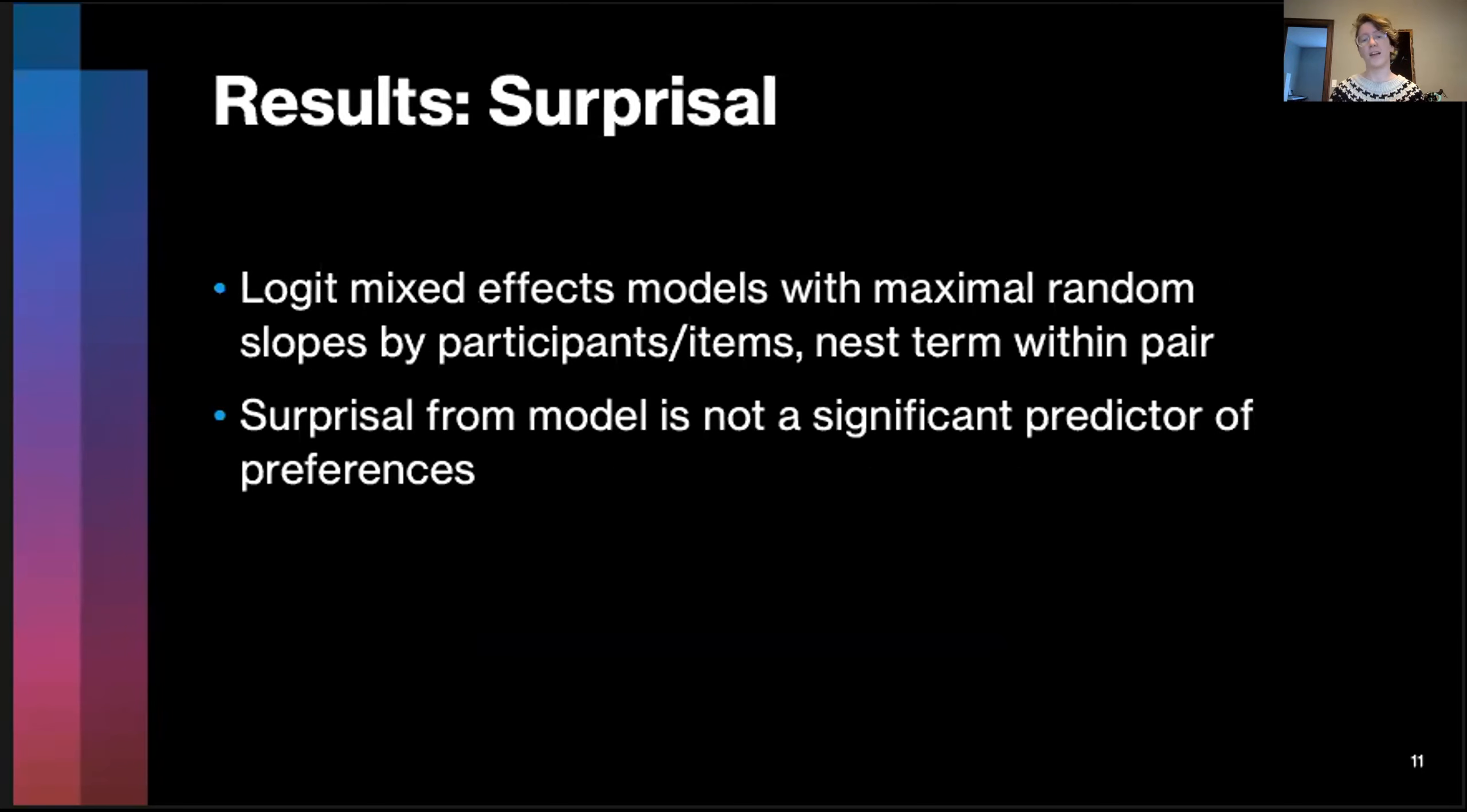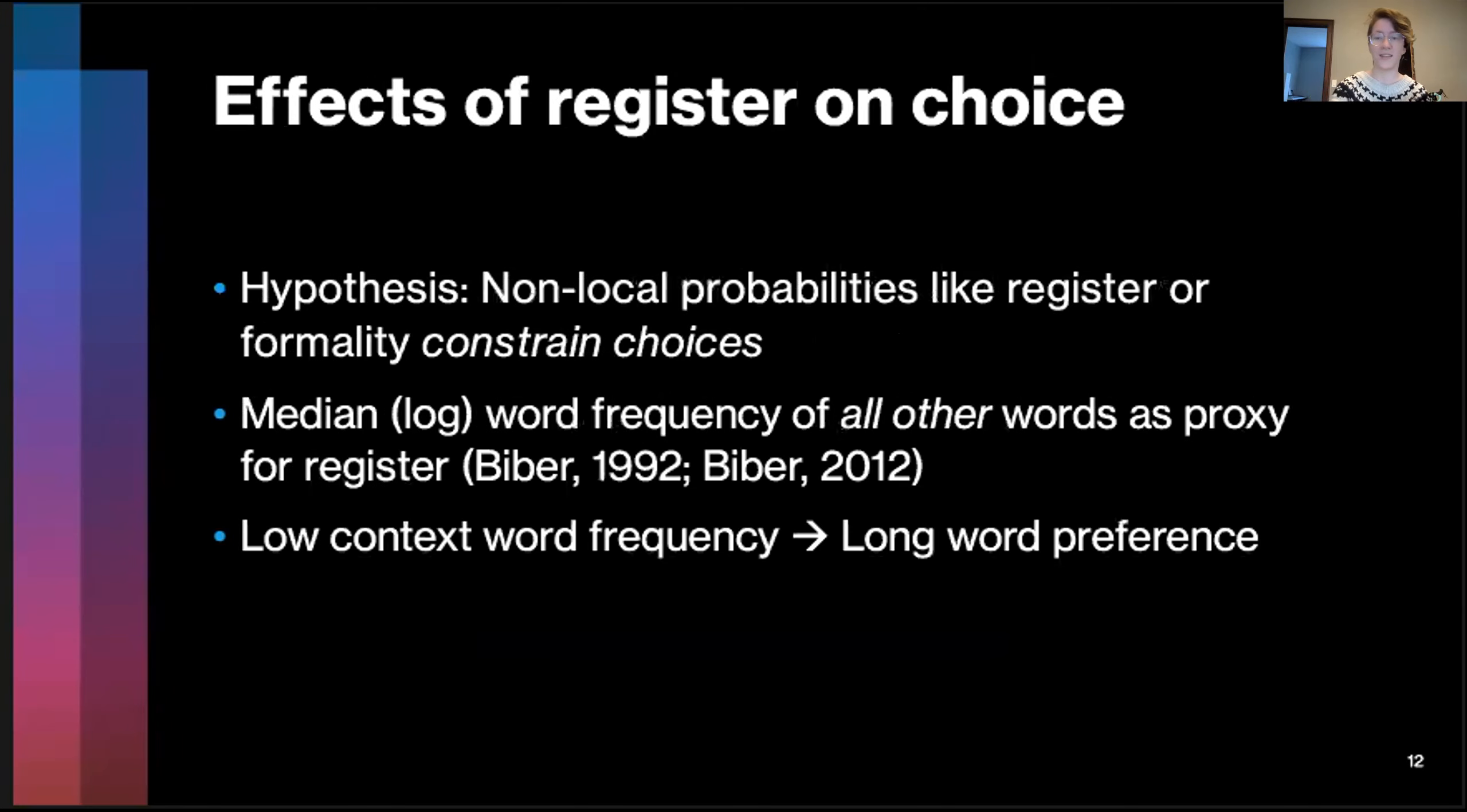That gives us a probability that we can then turn into a surprisal. From that, we can do a really standard analysis. We can look at the probability that somebody is going to rate a sentence as being better with the short word or better with the long word as a function of surprisal in a mixed effects modeling framework. What we find is that surprisal was not a significant predictor of preferences, and that was really surprising to us. But at the same time, we were able to follow up on this by looking at the effects of broader predictors within the sentence. For that, we use a measure of the non-local probabilities or the formality of the utterance to constrain choices. We look at the median log word frequency of all the other words in the context as a proxy for register.